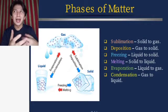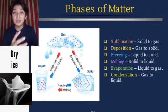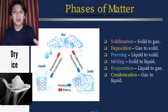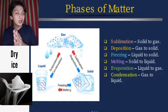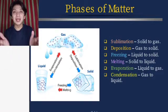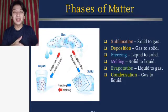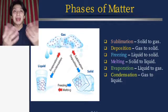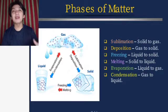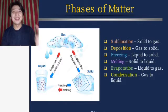Deposition is the process — for example, the formation of dry ice. When you freeze or solidify carbon dioxide, the CO₂ solidifies to make dry ice. Then we have freezing, which is from liquid to solid. We have melting, which is from solid to liquid. We have evaporation, which is from liquid to gas. And we have condensation, which is from gas to liquid. Matter can change depending on the temperature.